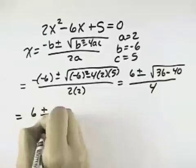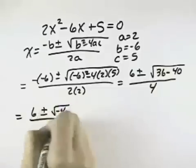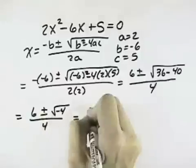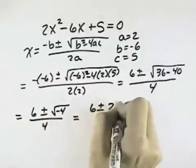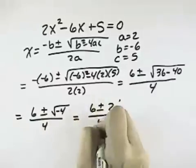So we'll get 6 plus or minus the square root of negative 4, all over 4, and the square root of negative 4 is 2i, so we get 6 plus or minus 2i over 4.